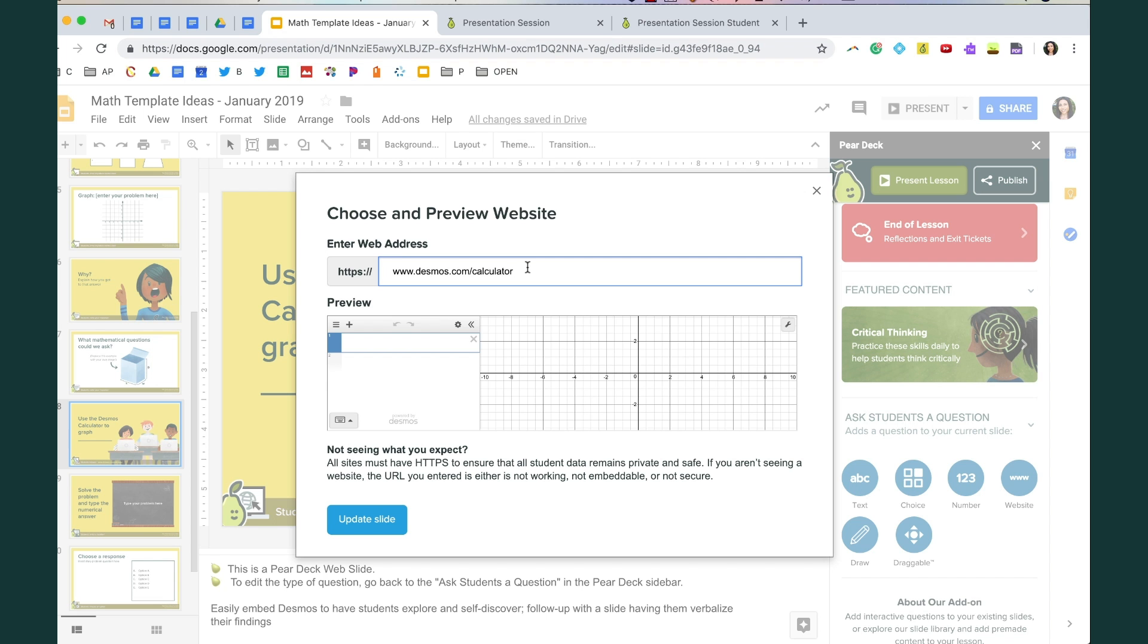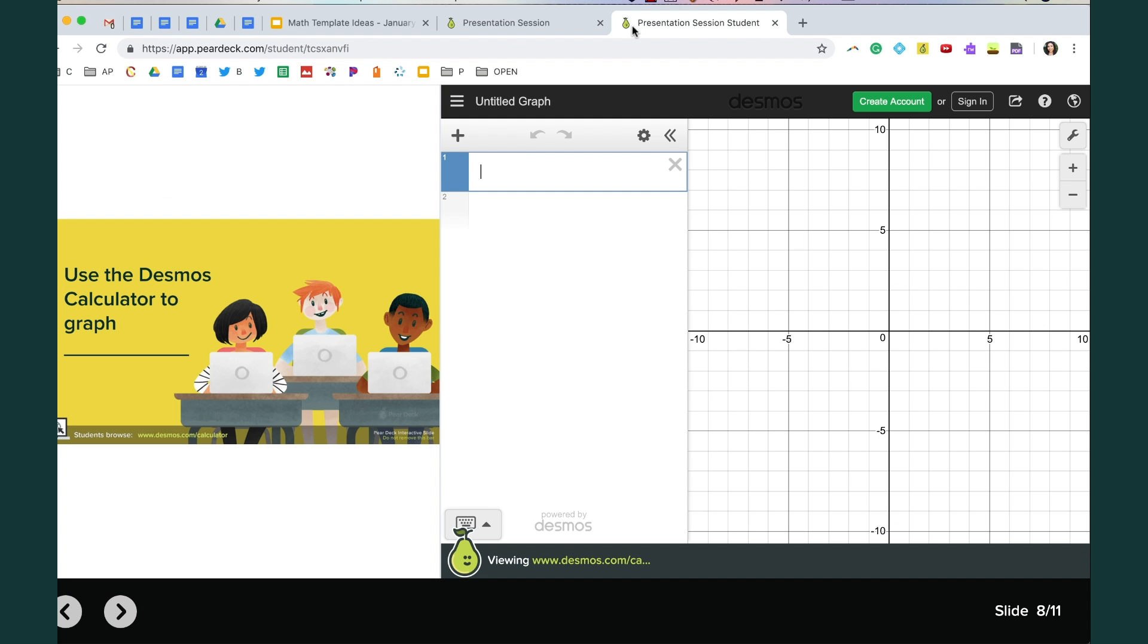You can just put in the Desmos graph. If you have one started you could put that in or if you just want them to be able to use the blank Desmos calculator, Desmos.com calculator and they can start playing with some sliders. Perhaps you want them to play with and see the effect of B and C on this graph and then you can follow up on the next slide. So on this slide you could ask a very specific thing for them to explore and then you can follow up on the next slide with a text type slide asking them to verbalize what they had discovered.